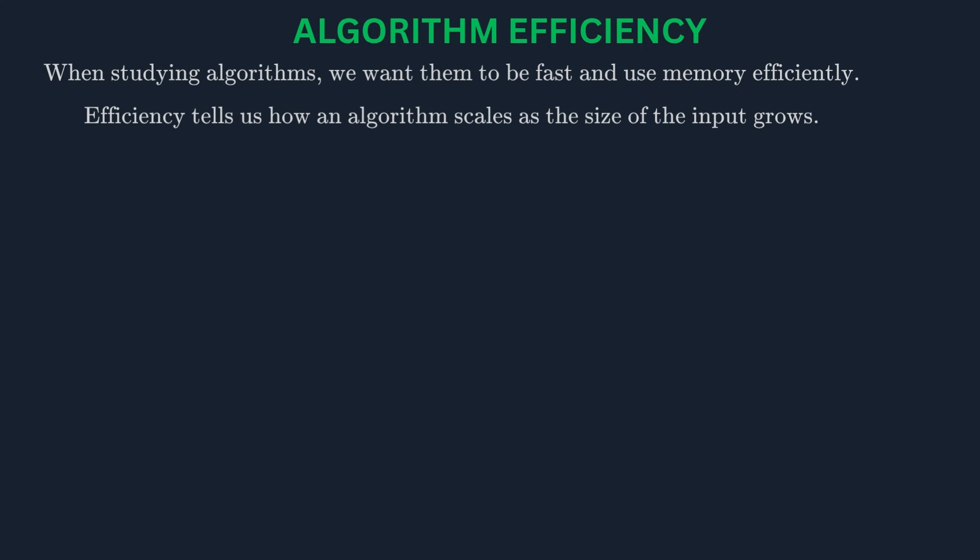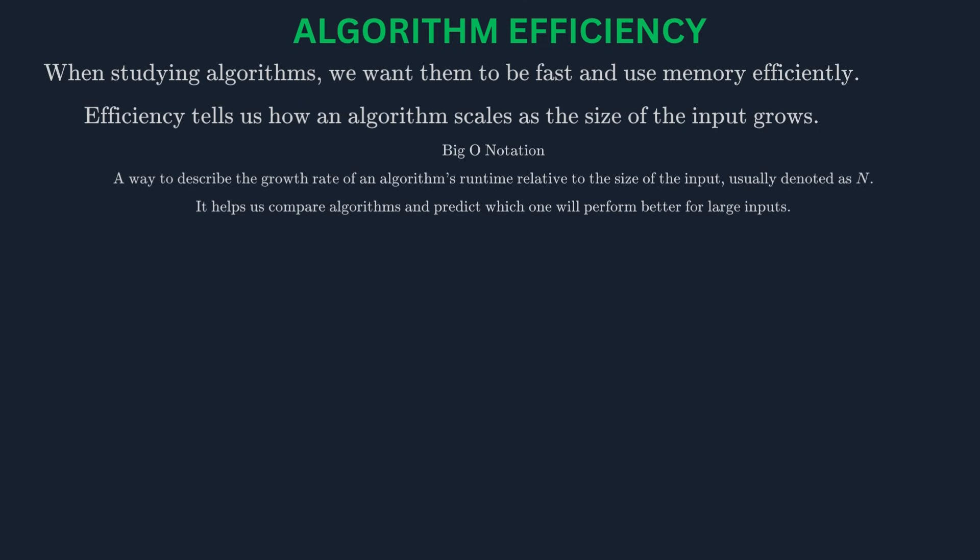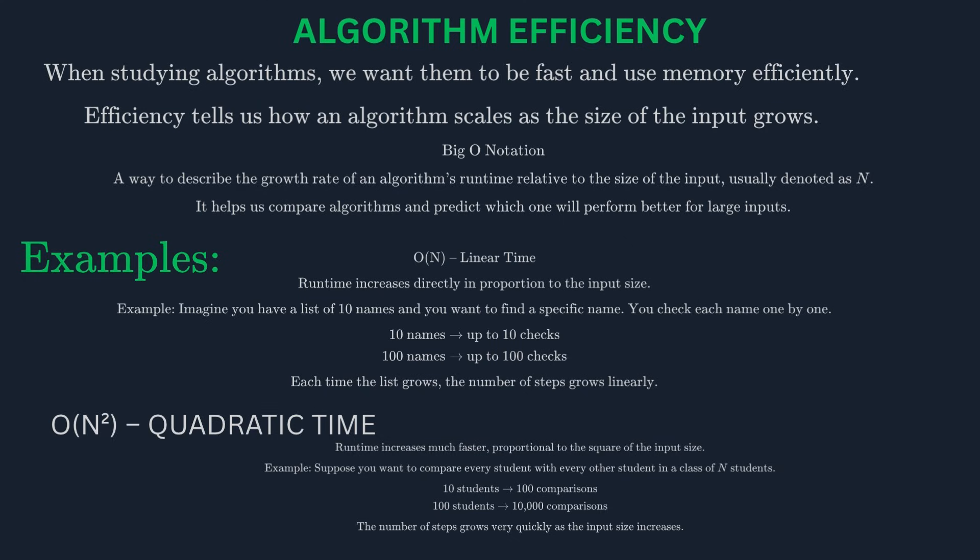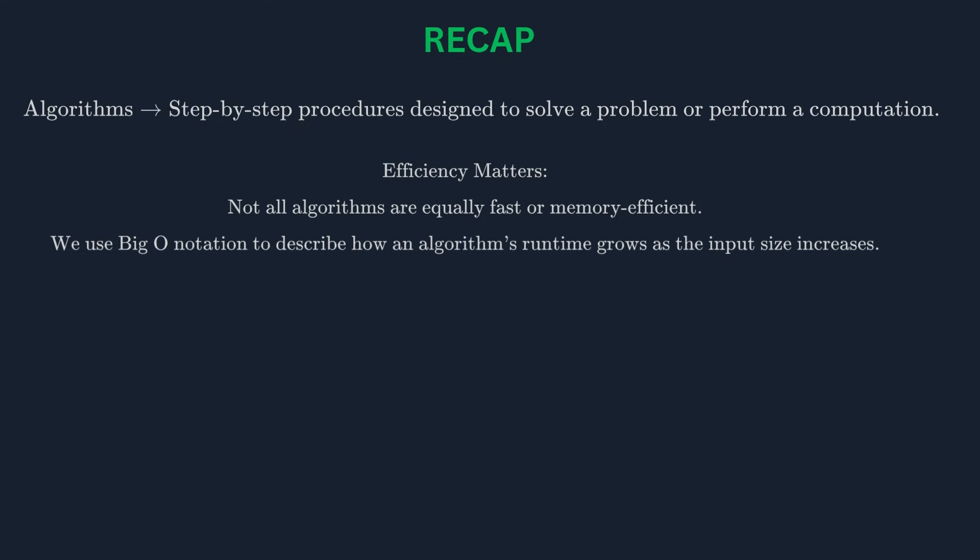A key part of studying algorithms is analyzing their efficiency. We want algorithms that are fast and don't use too much memory. We use something called Big O notation to describe the growth rate of an algorithm's runtime as the input size increases. For example, an algorithm with O(n) complexity means its runtime grows linearly with the input size n. An algorithm with O(n²) complexity means its runtime grows much faster—quadratically. Understanding Big O notation helps us compare algorithms and choose the best one for a given task. So to recap: algorithms are precise, step-by-step procedures for solving problems. We can analyze their efficiency using tools like Big O notation to understand how they perform as the input size grows.